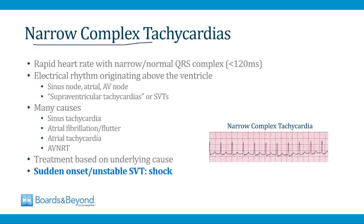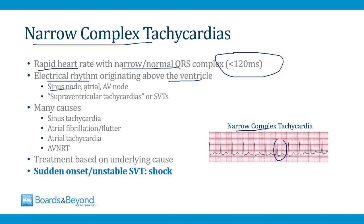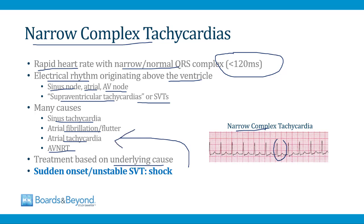Narrow complex tachycardias have a rapid heart rate with a QRS interval less than 120 milliseconds. When the QRS interval is narrow, it always means the rhythm is originating above the ventricle — from the sinus node like sinus tachycardia, from the atria like atrial fibrillation, or from the AV node. Because all narrow complex tachycardias originate above the ventricle, we call them supraventricular tachycardias or SVTs, which include sinus tachycardia, atrial fibrillation and flutter, atrial tachycardia, and AVNRT. Treatment is always based on the underlying cause.